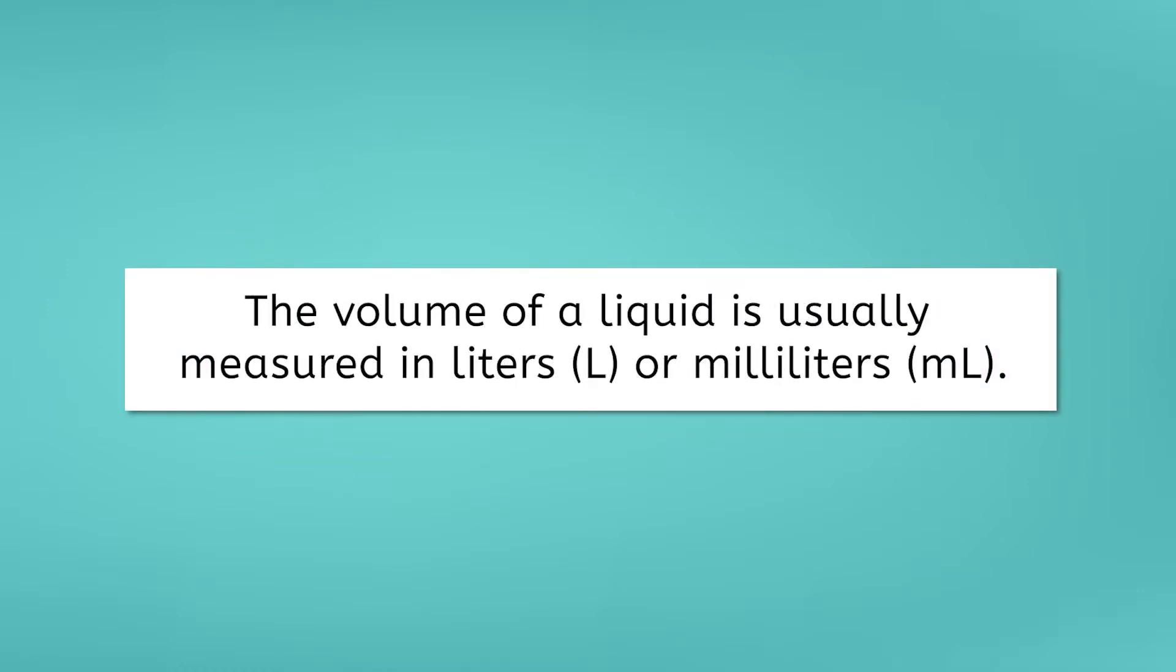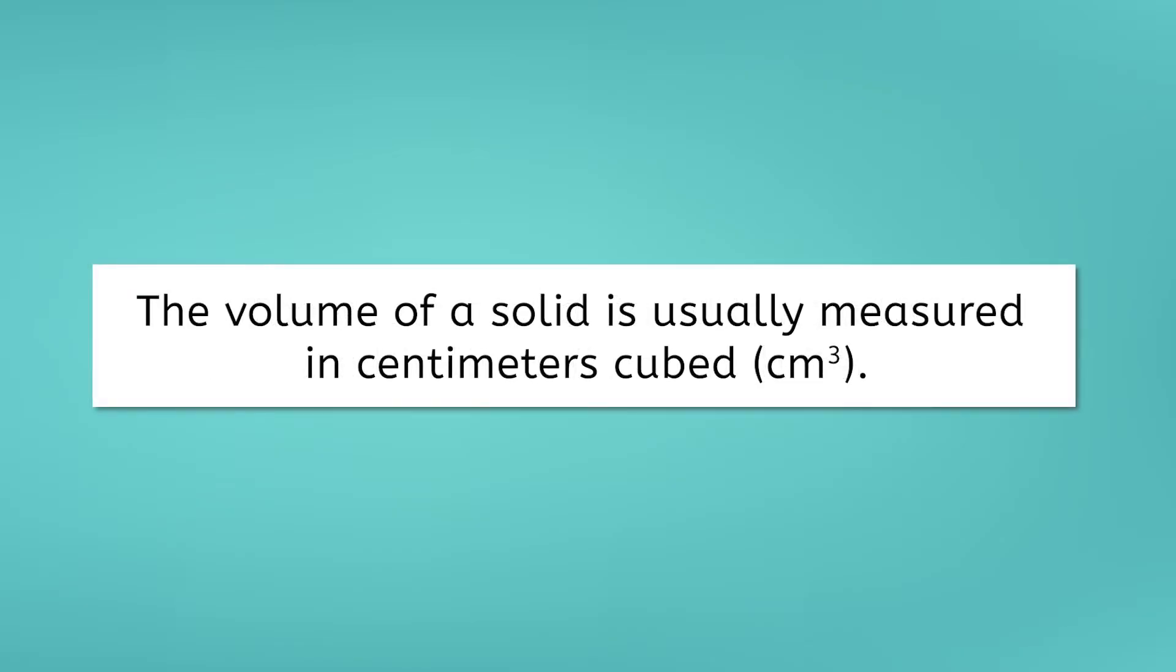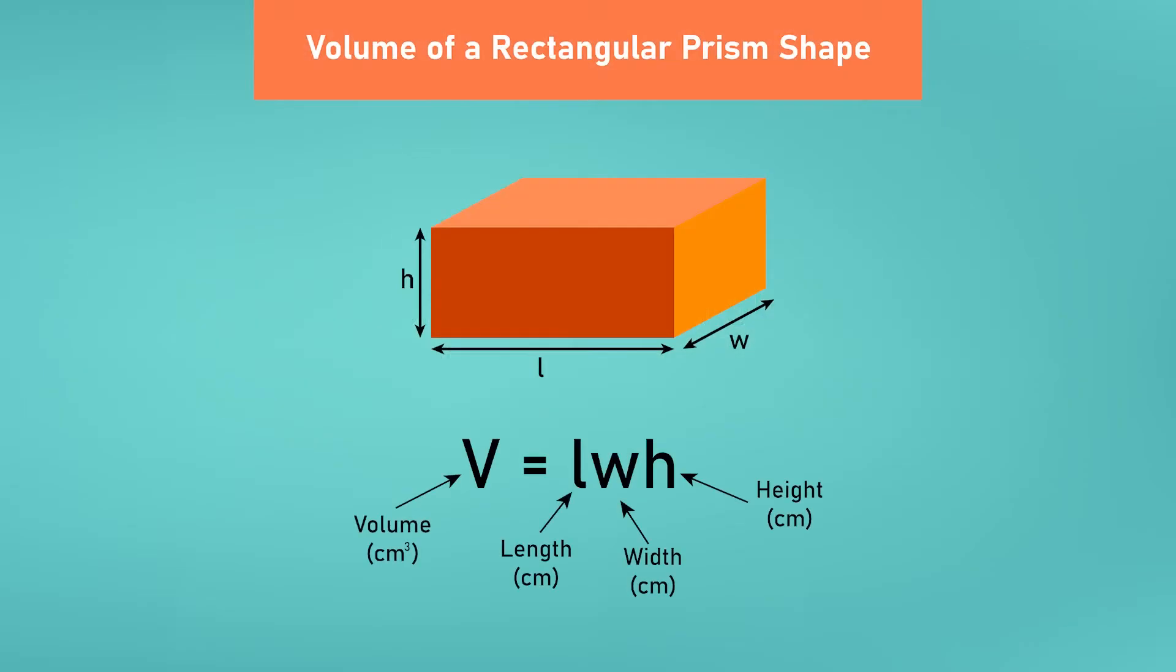For solids, the unit for volume is usually centimeters cubed. This unit comes from the formula of volume for a rectangular prism. To find the volume of the prism, you multiply the length times the width times the height. Let's look at an example.